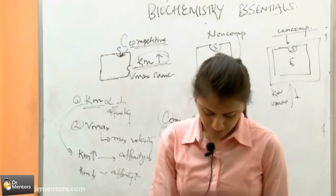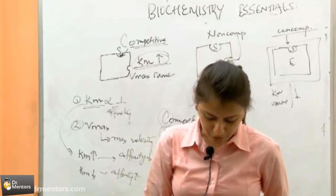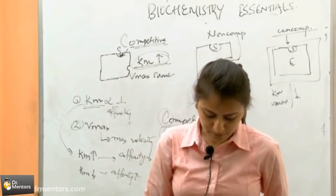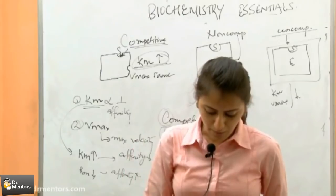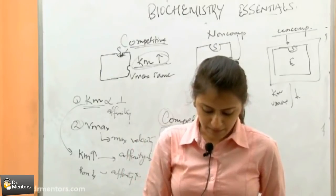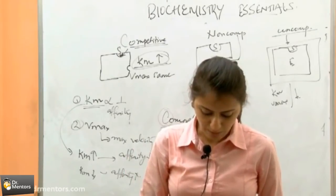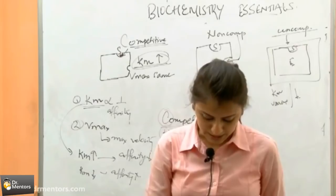So the answer to this MCQ would be: in competitive inhibition, Km increases and Vmax is the same. So the answer is option B.